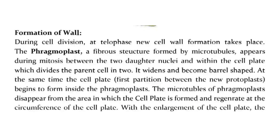During cell division, at telophase, new cell wall formation takes place. The phragmoplast, a fibrous structure formed by microtubules, appears during mitosis between the two daughter nuclei and within the cell plate which divides the parent cell in two. It widens and becomes barrel-shaped. At the same time, the cell plate — the first partition between the new protoplasts — begins to form inside the phragmoplast.